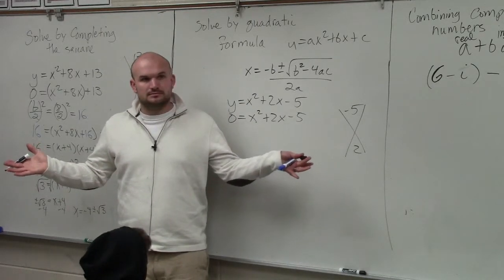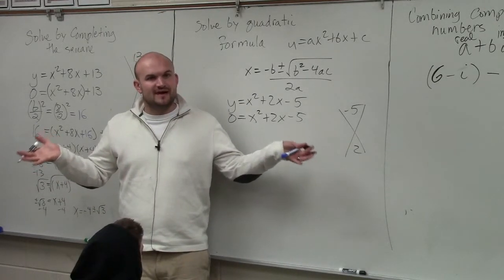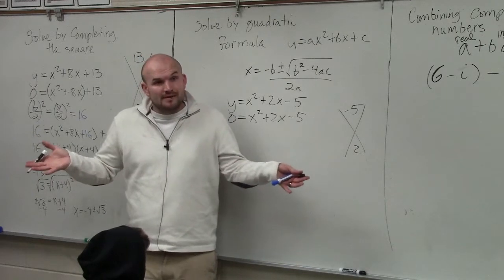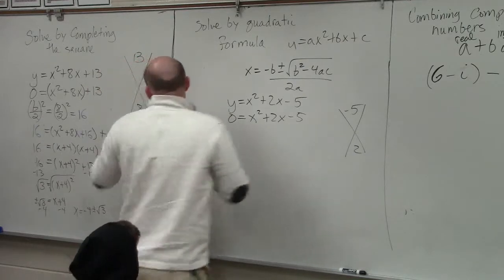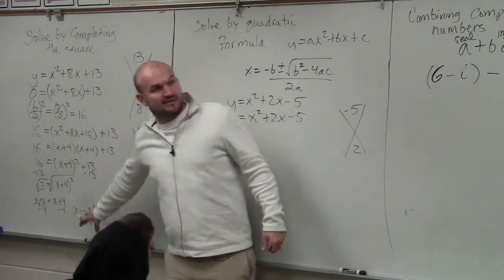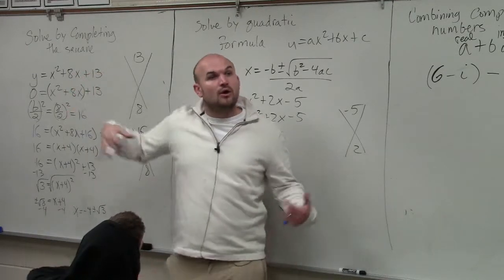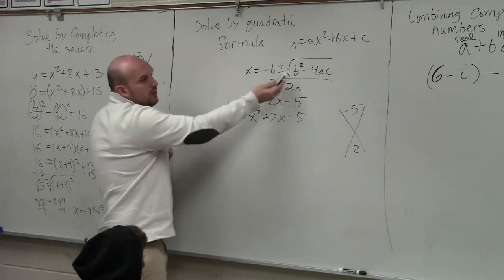And we think about it. What two numbers multiply to give you negative 5, add to positive 2? Nothing. It's not factorable, right? So you have two options. You can do this formula that we did in Asia, you can complete the square, or we can use our quadratic formula.